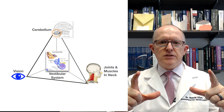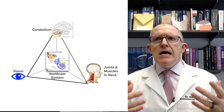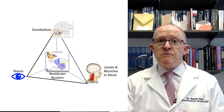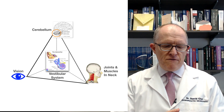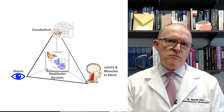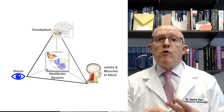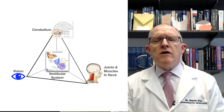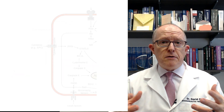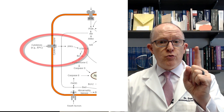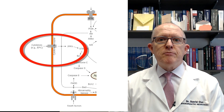Let me explain that with a graphic I call the balance stability pyramid. At the base of the pyramid, you've got three corners: information from your eyes, information from your inner ear, and information from the joints and muscles in your neck — primarily the upper neck — all important for your stability and balance. At the top is the cerebellum. Every neuron carrying that information has receptors for cytokines, meaning cytokines from your immune system can affect how your nervous system works.